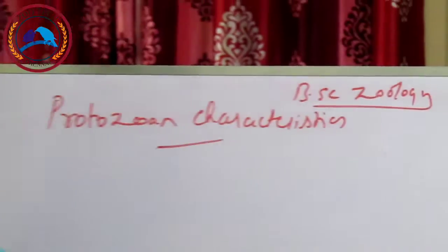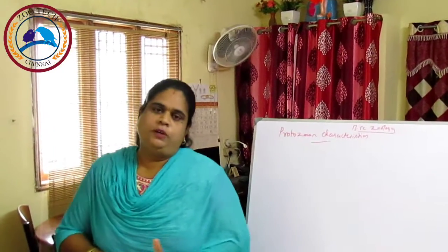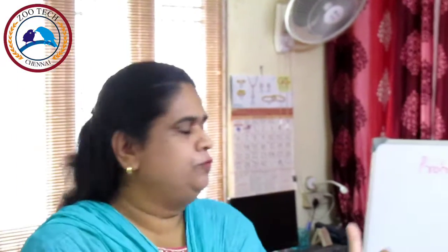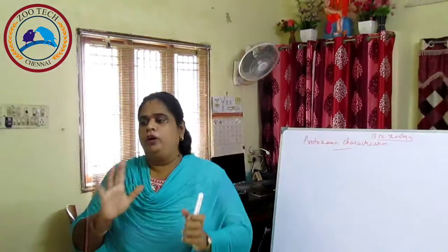So, protozoan characteristics. First, we want to know the definition for protozoa. Protozoa can be defined as microscopic acellular animalcules existing singly or in colonies, without tissues and organs, having one or more nuclei. That is the definition for protozoa.